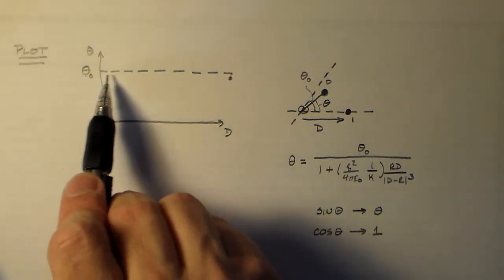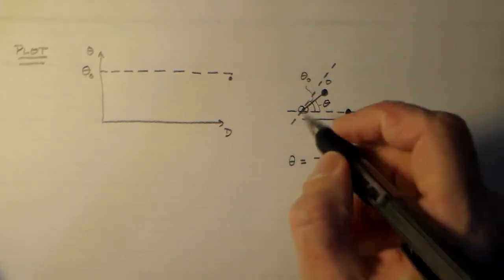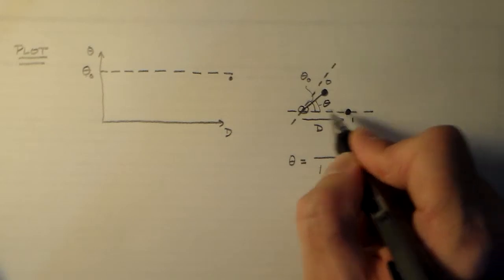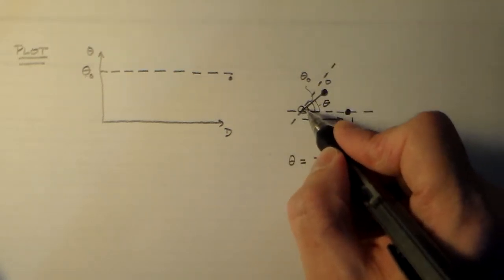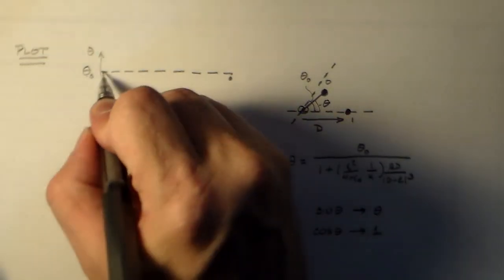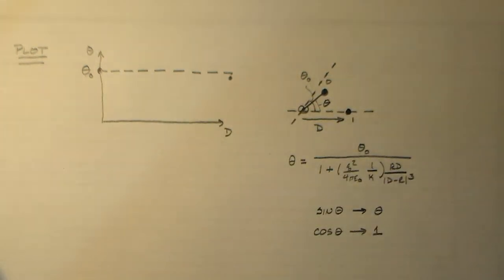It's also true that we're close to theta naught when we make d zero, because the force from the source charge, if we bring it here, is going to pull this way. And that's just going to pull the ball towards the rod. So it's not going to change the angle at all. There's no torque. So we end up with that point as well.